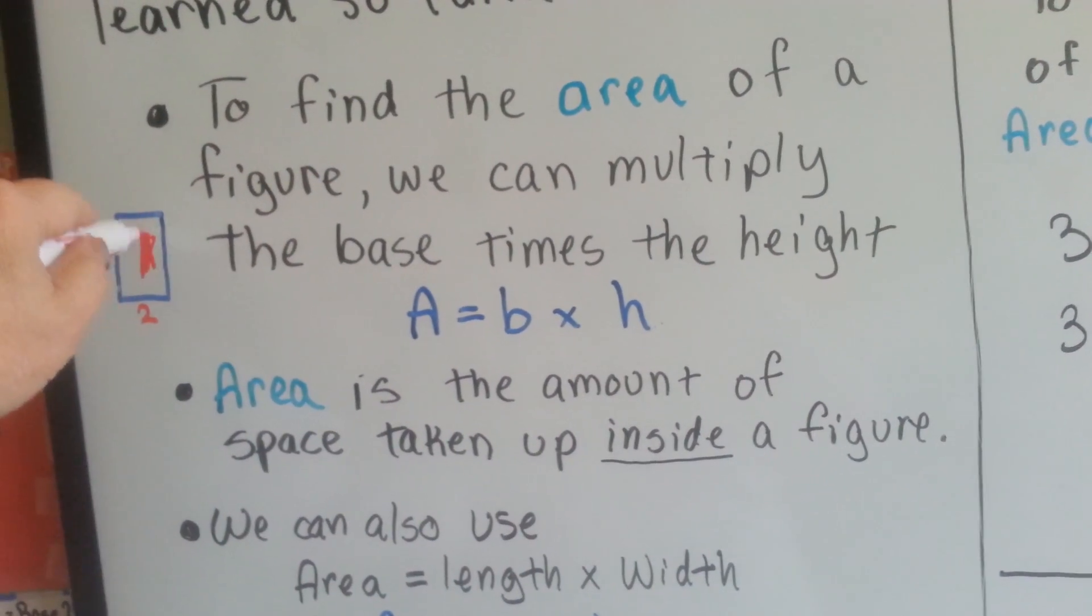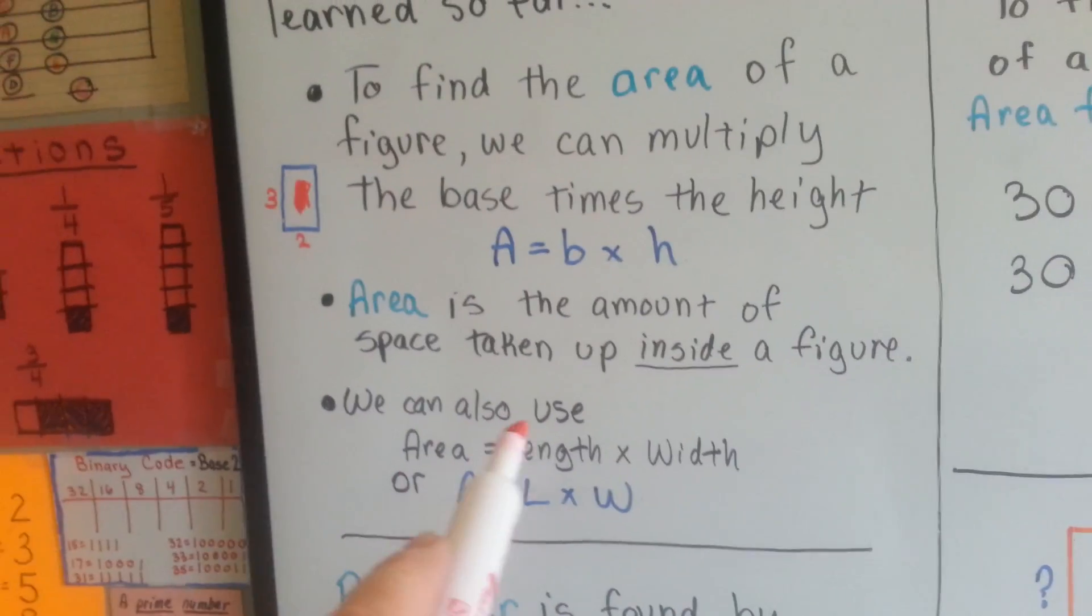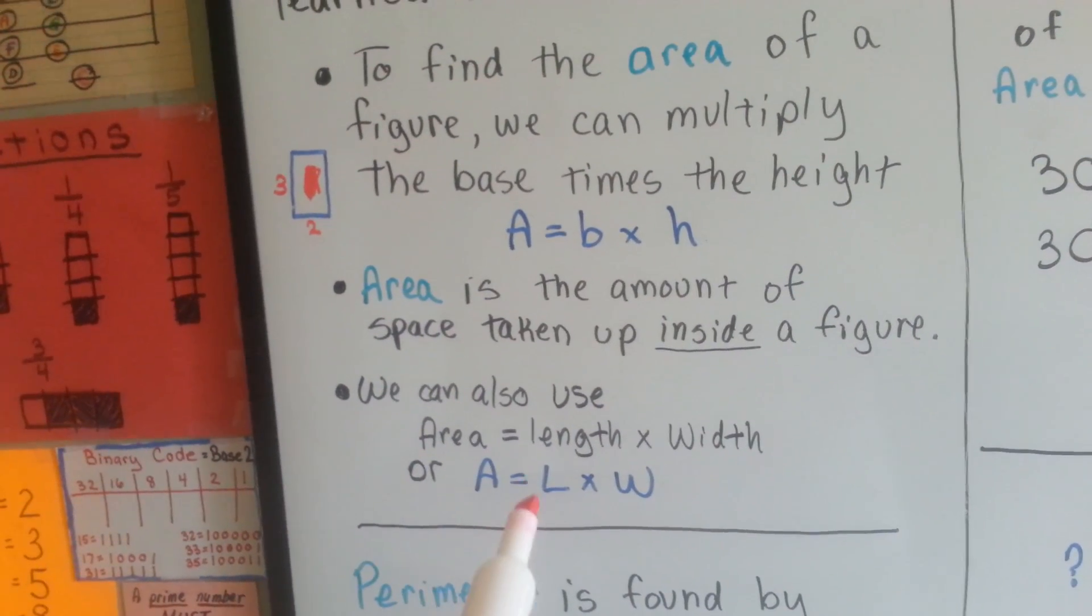The area is the amount taken up on the inside. This red part inside would be the area, the blue line is the perimeter. We can also use length times width, area equals L times W.